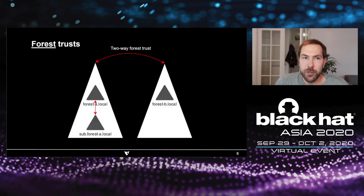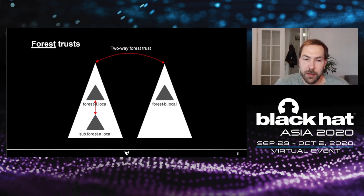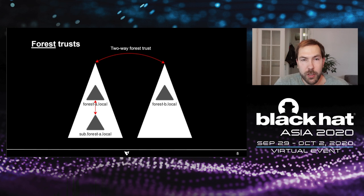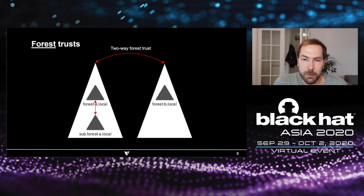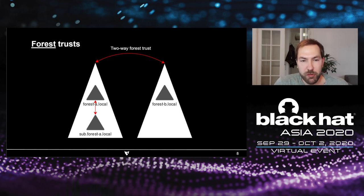What we're talking about today is trusts, and especially forest trusts. A forest trust is different from a domain trust. On the left, we see a forest with two domains — forest A and a subdomain — and in this forest, the domains trust each other. If you compromise one domain, you can basically use the legitimate functionality to compromise the whole forest. A forest, on the other hand, is supposed to be a security boundary, and you're not supposed to be able to go from forest A to forest B by default. However, a trust is usually set up to allow people to authenticate from forest A into forest B.